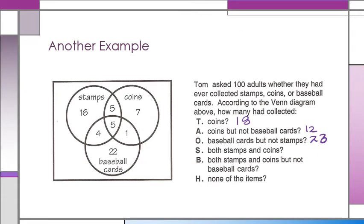Stamps and coins would be where they overlap, so they overlap right here. And means that they have to do both. And means both, so there are 10 people that do both. Now, both stamps and coins but not baseball cards would take out that 5 right there and leave us with only 5.